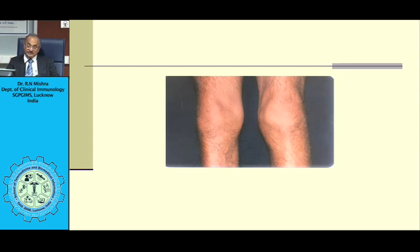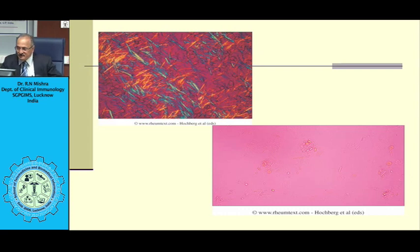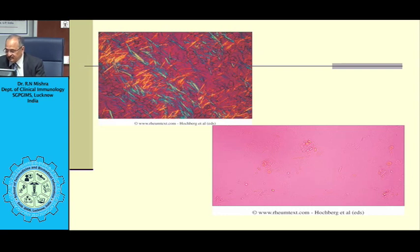In a similar presentation in a middle-aged or elderly patient, you can identify the arthritis by polarizing microscope. You can see needle-shaped crystals which are strongly negative for birefringence — that is monosodium urate. These crystals can also be identified from CPPD, though the second picture in the bottom panel has unfortunately not come out well.